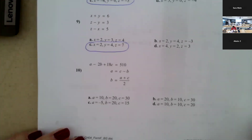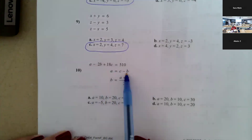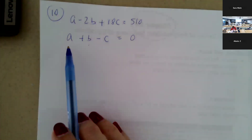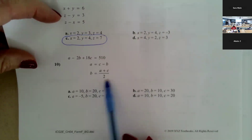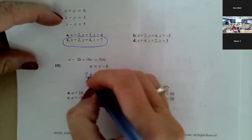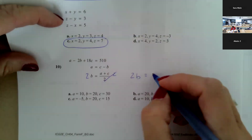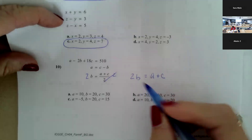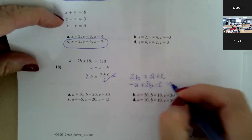Moving on to number ten. I've got a, b, and c. Row two I'm going to rewrite so that they're all on the same side of the equation: a plus b minus c equals zero. For this third equation, I'm going to multiply by two so the fraction eliminates, giving two b equals a plus c. Putting them on the same side: negative a plus two b minus c equals zero.